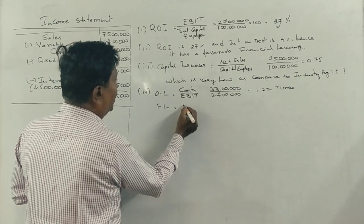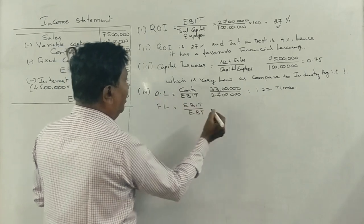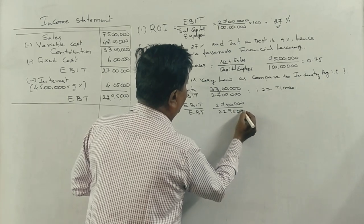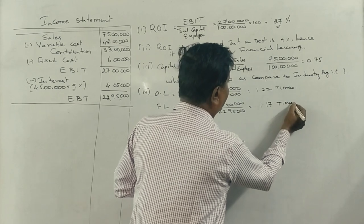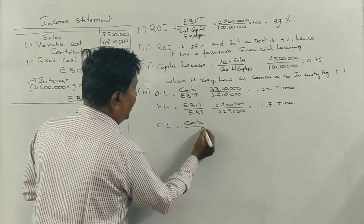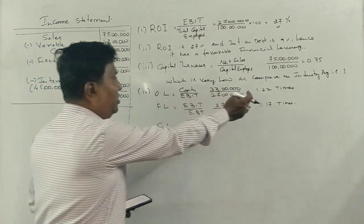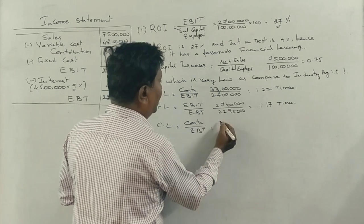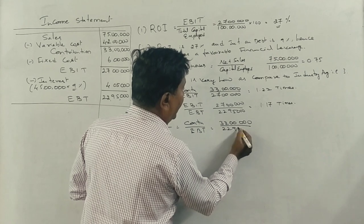Financial leverage equals EBIT divided by EBT. EBIT is ₹27 lakhs and EBT is ₹22,95,000. Financial leverage equals 1.17 times. Combined leverage equals contribution divided by EBT, or operating leverage multiplied by financial leverage. Contribution is ₹33 lakhs and EBT is ₹22,95,000.